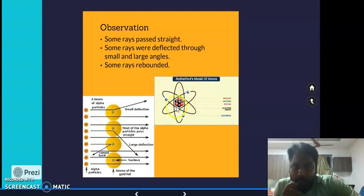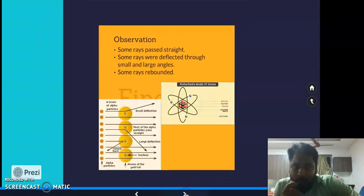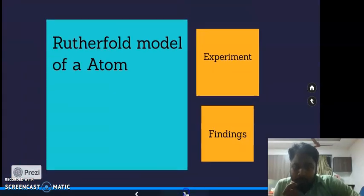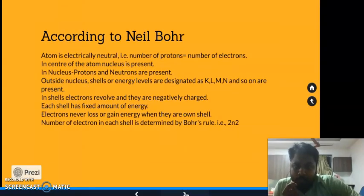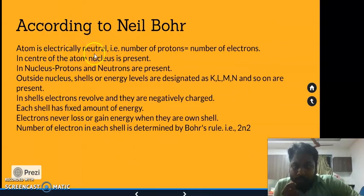Next, we move on to Niels Bohr. He had findings where the atom is electrically neutral, and the number of protons is equal to the number of electrons. In the center of the atom, the nucleus is present.